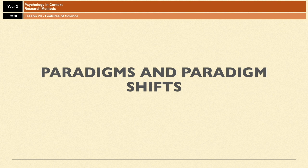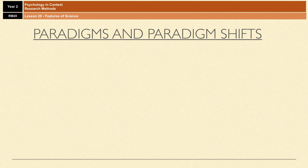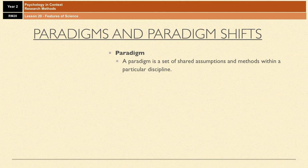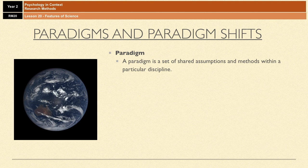The final feature of science is paradigms and paradigm shifts. A paradigm is a set of shared assumptions and methods within a particular discipline — a set of beliefs shared by everybody within that field. A classic example is the idea that the world is round, which is a shared assumption amongst scientists of all disciplines. That paradigm wasn't always the case; for a very long time everybody thought the world was flat.